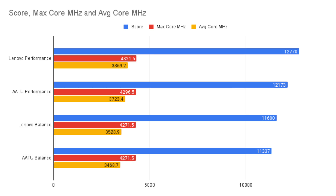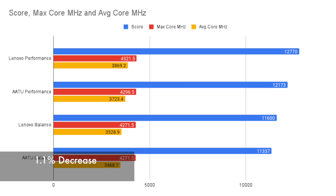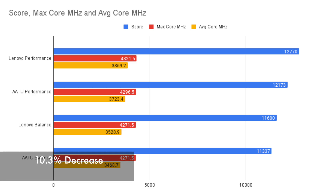The max core frequency of the cores follows the same pattern. The Lenovo Performance mode again has the highest at 4,321.5 MHz and, like the scores, it gradually decreases to 4,271.5. There is a tie in both applications using Balance mode, resulting in a 1.1% decrease, which isn't bad at all. The average core speed is led by Lenovo Performance mode at 3,869.2 and ends with AATU Balance mode at 3,468.7 — a 10.3% decrease.